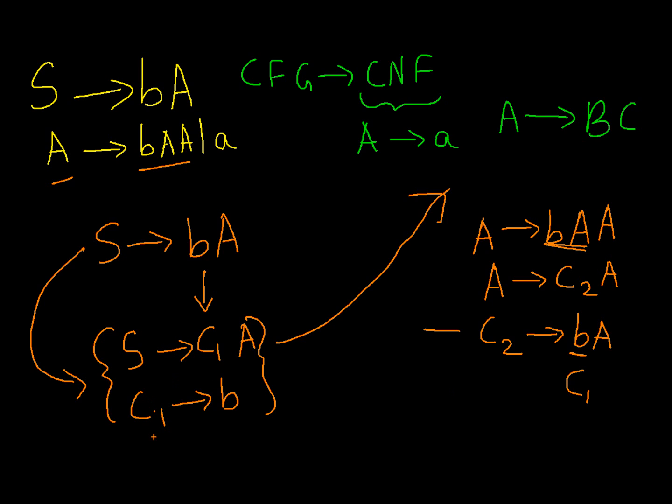And this A will be as it is. So we have C2 produces C1A, and this step now is in Chomsky normal form.